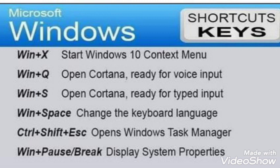Windows + Q: open Cortana ready for voice input. Windows + S: open Cortana ready for typed input. Windows + Space: change the keyboard language. Ctrl + Shift + Escape: open Windows Task Manager. Windows + Pause/Break: display System Properties. Thank you friends, have a good day.